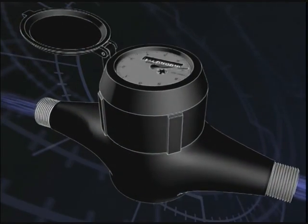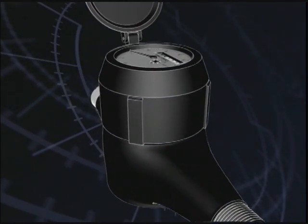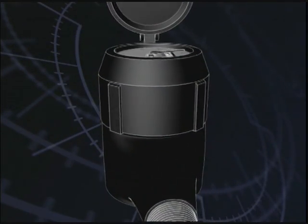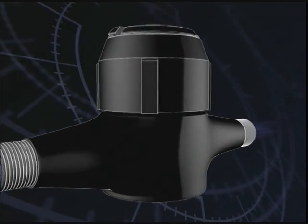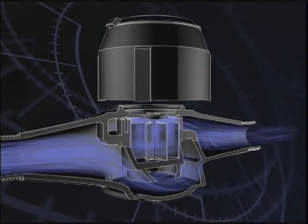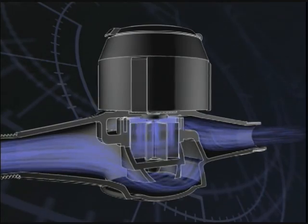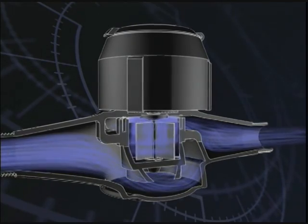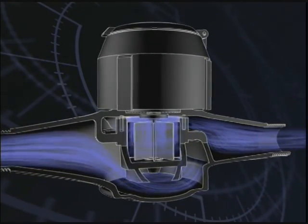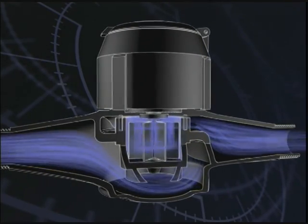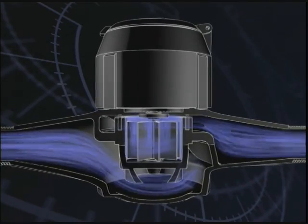Another type of residential meter is the multi-jet meter, which comes in both wet and dry register models. Openings in the chamber direct the water flow across a multi-veined rotor. The output speed of the rotor is proportional to the quantity of water passing through the measuring chamber.